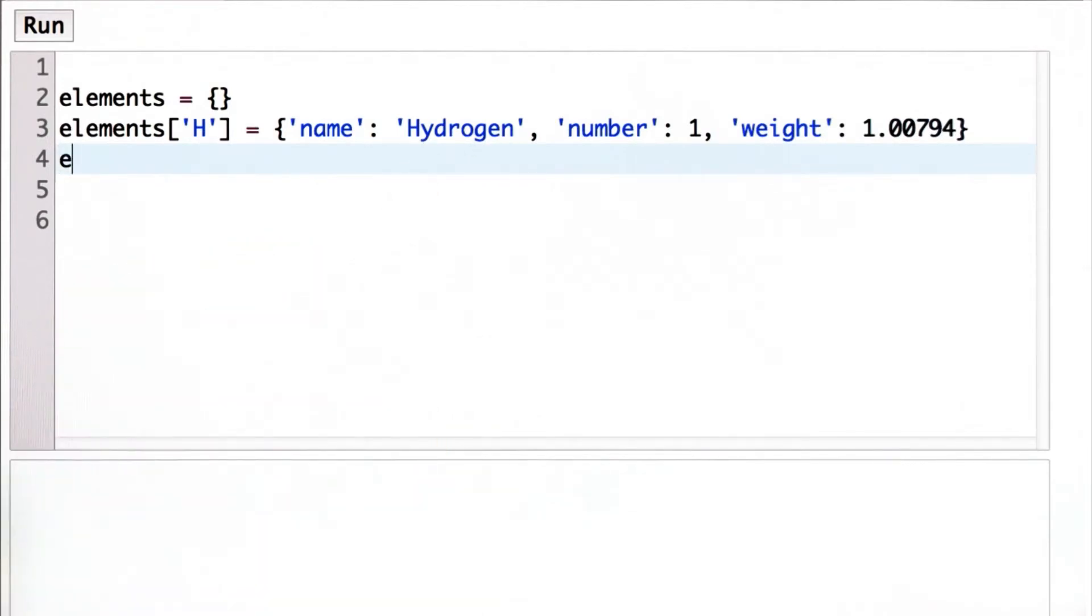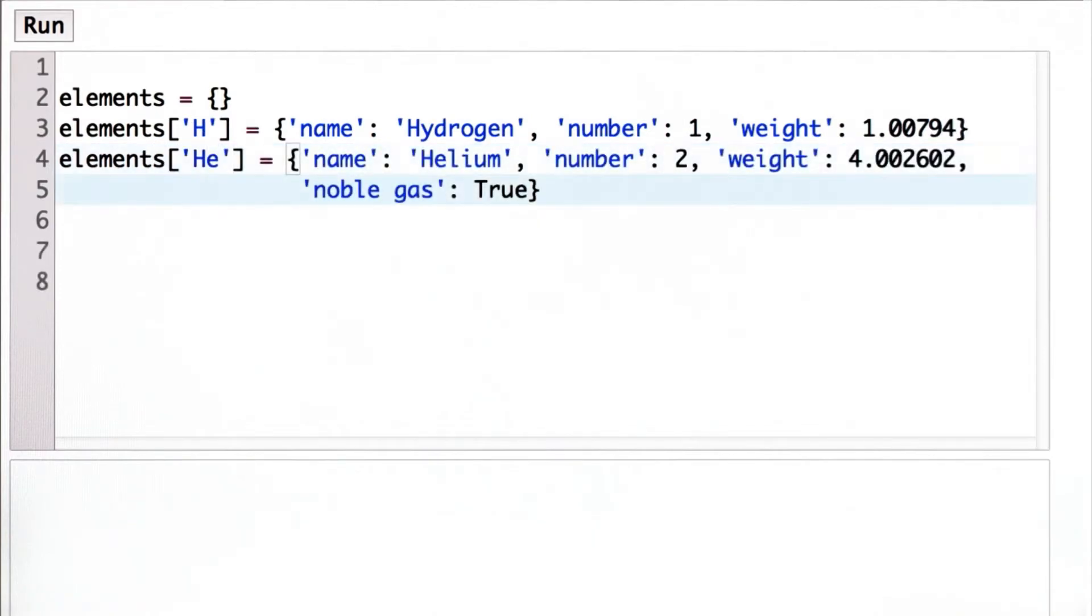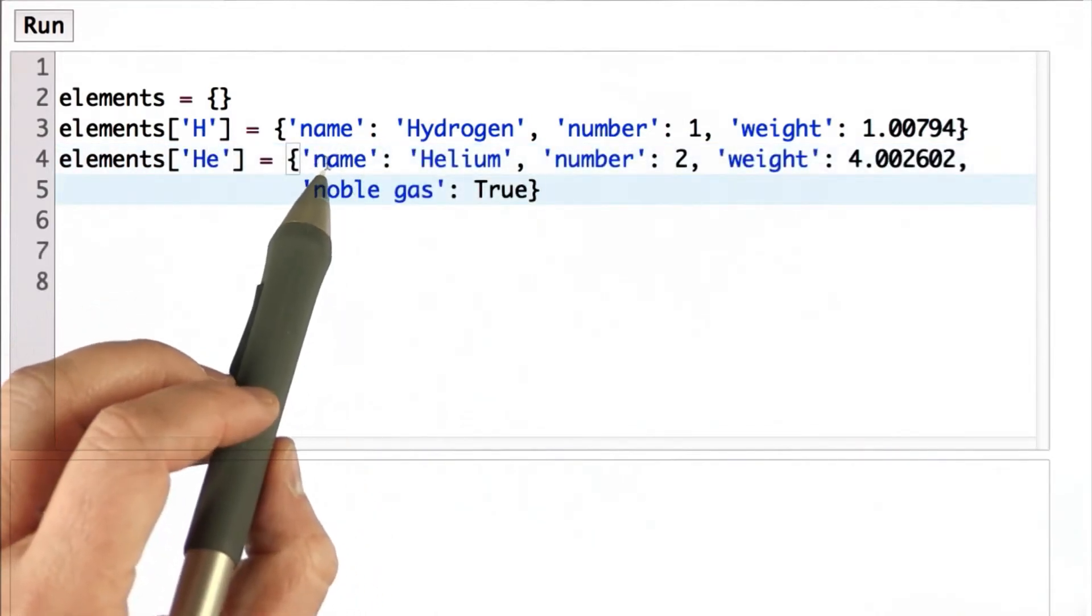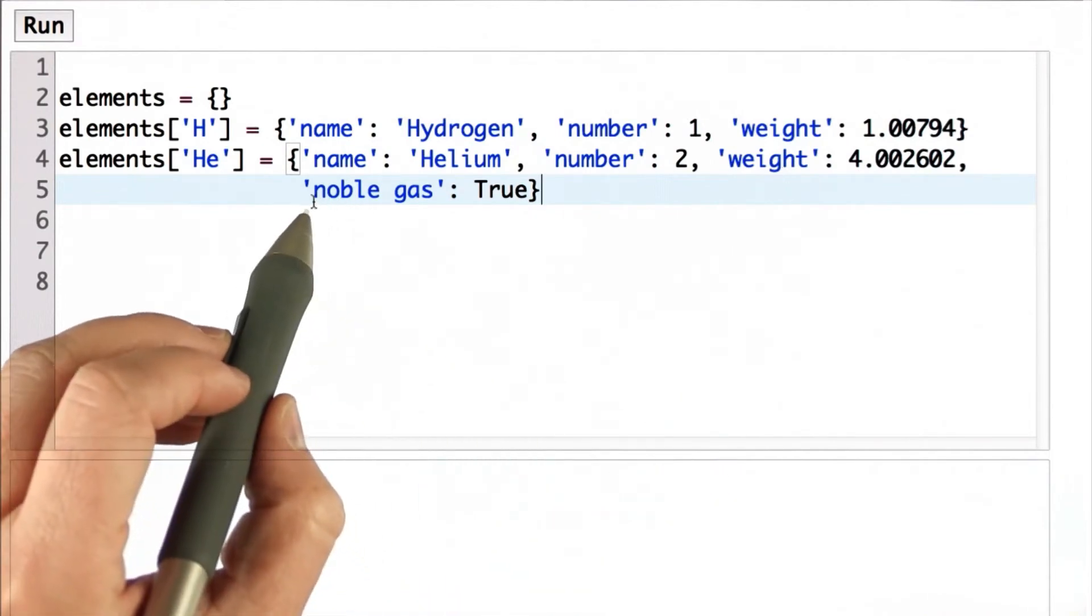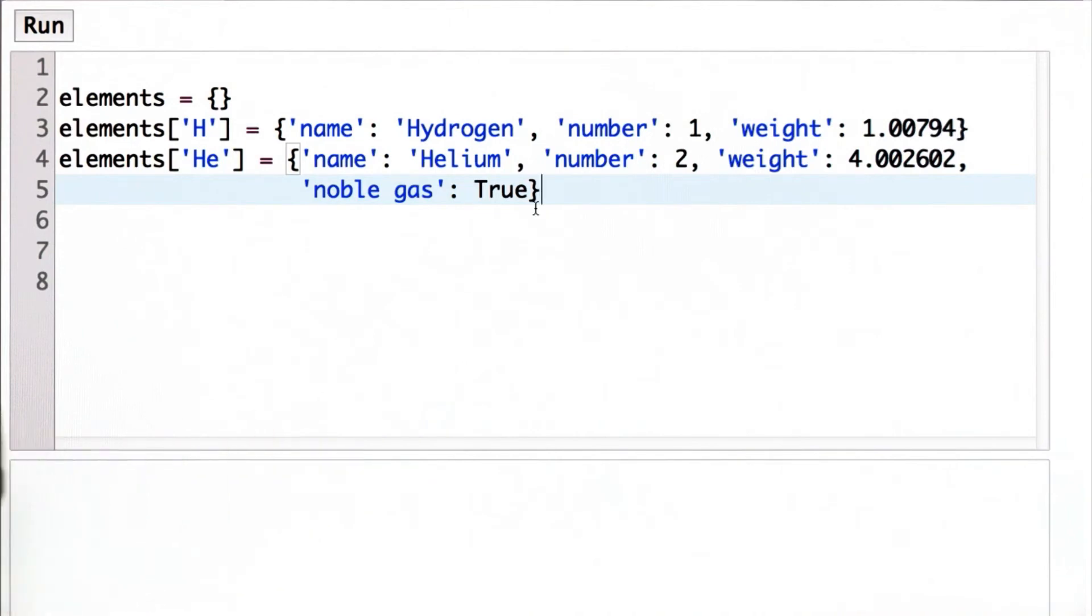We'll add another element to our dictionary. And so for helium, we have the same name, number, and weight keys. And so for helium, we have an extra entry that says it's a noble gas, and the value of noble gas is true.